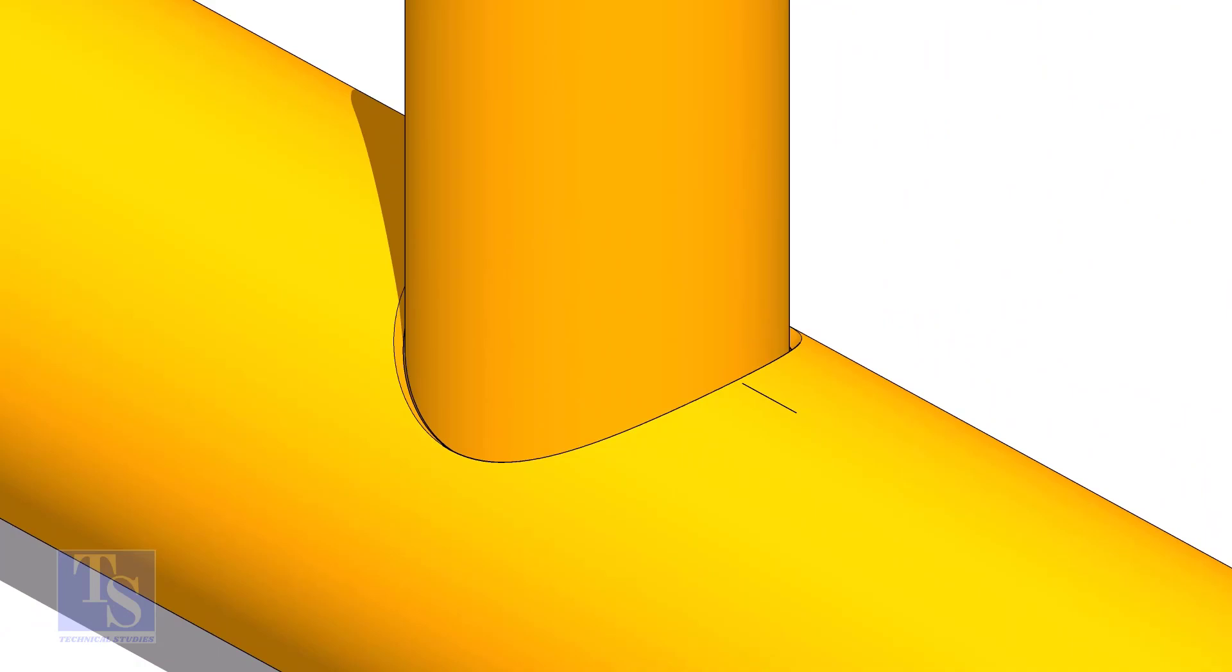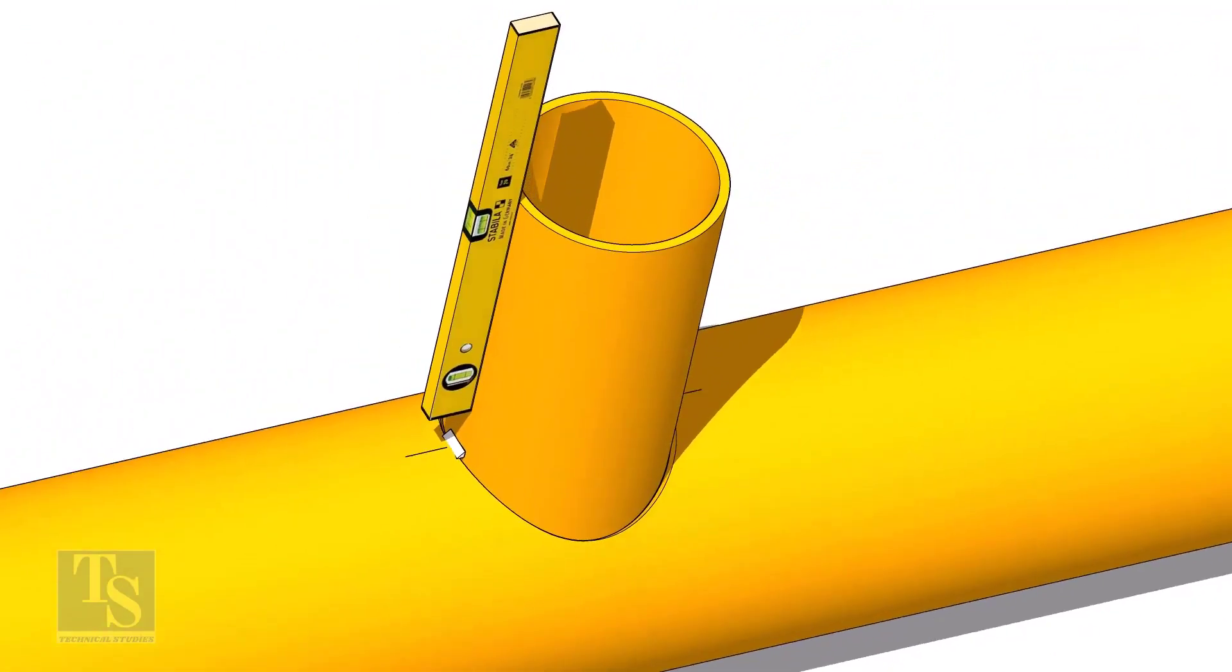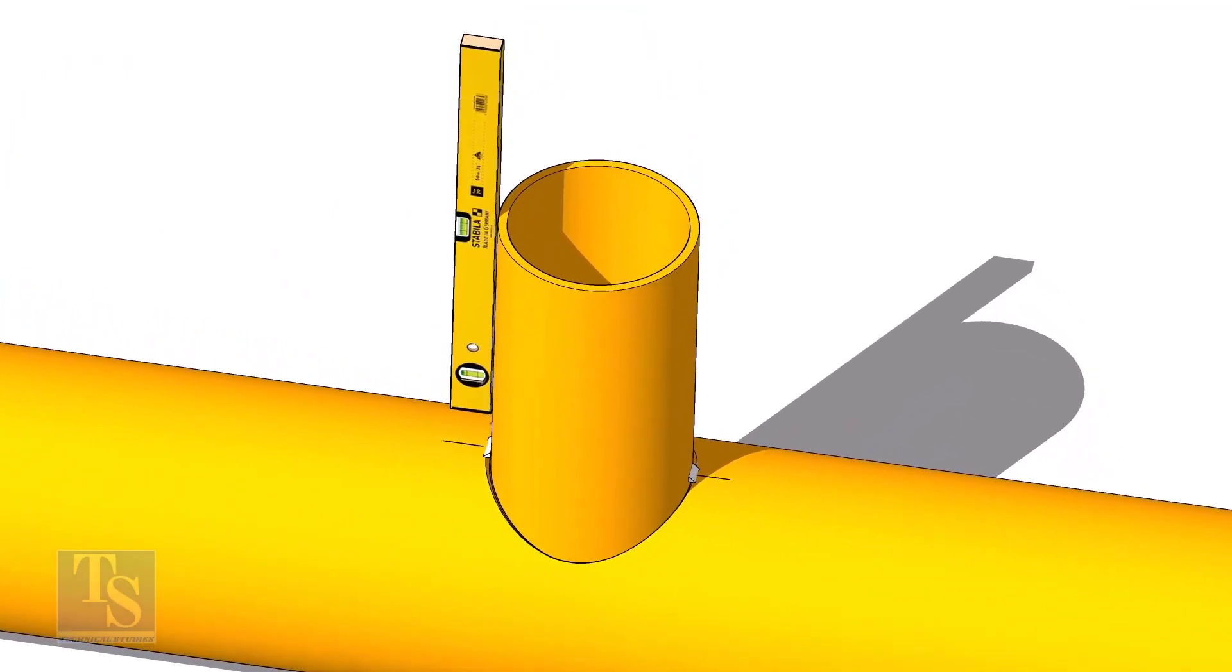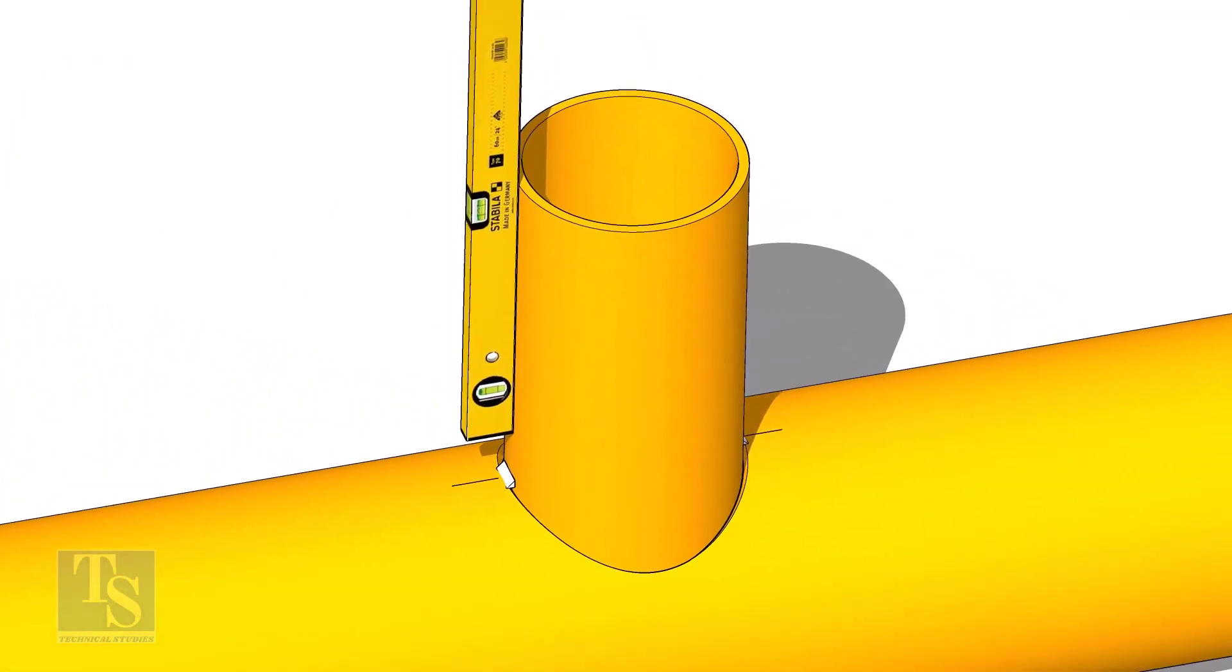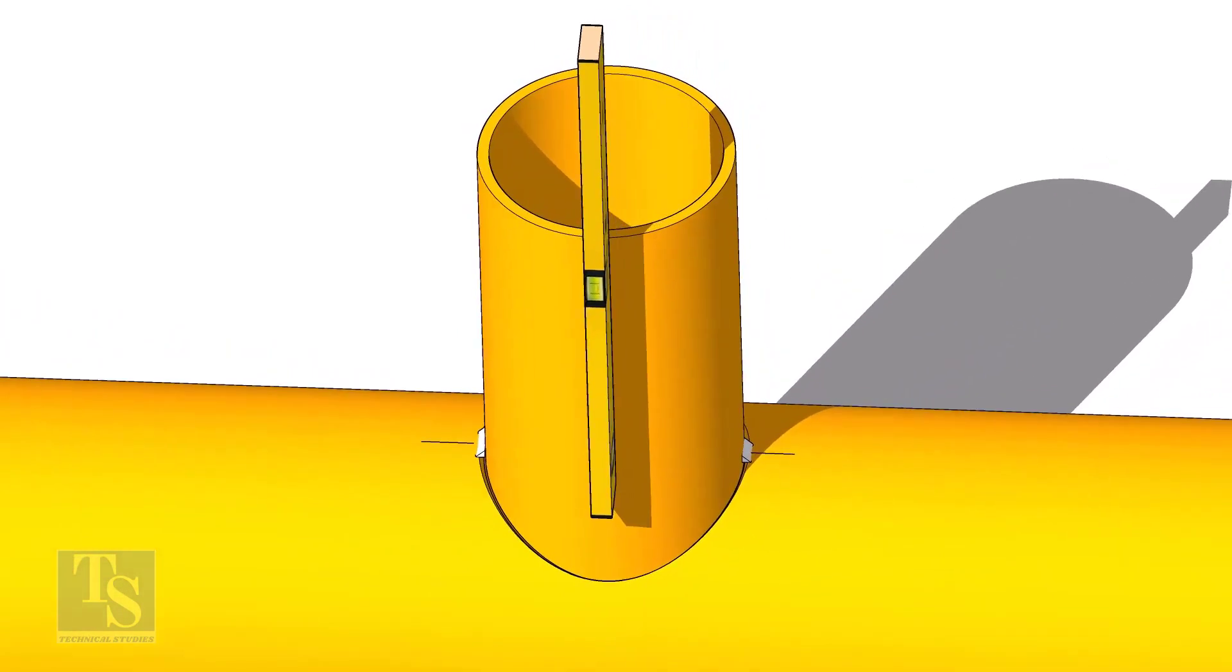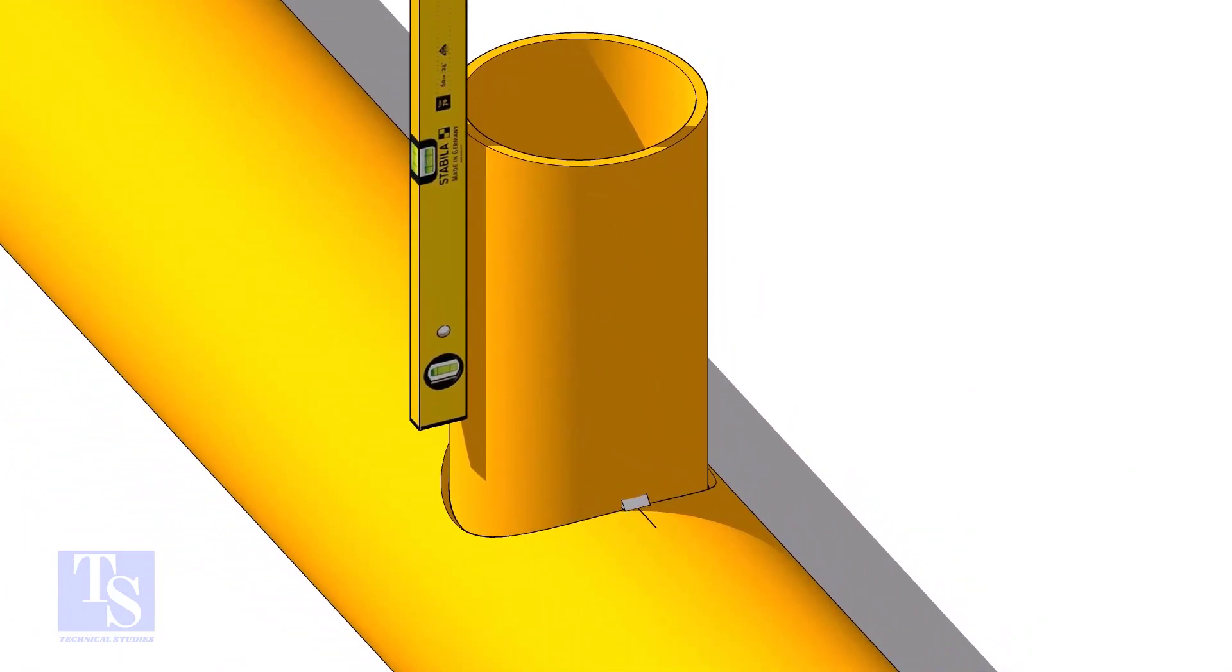Put the branch in its position. Tack weld at one side and check the level of the branch. If the level is correct, tack weld on the other side. Make level of the other face of the branch and tack weld on both sides.